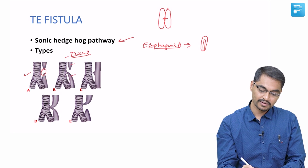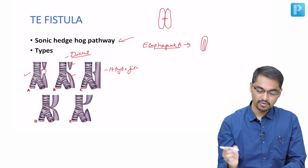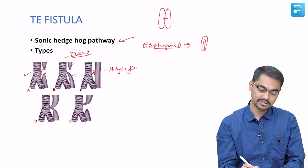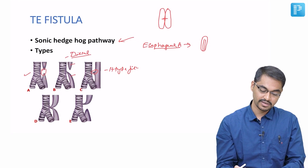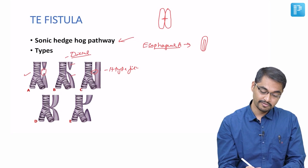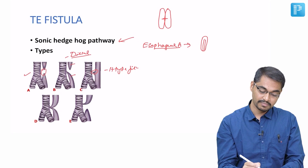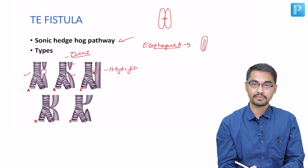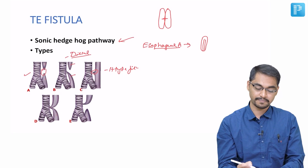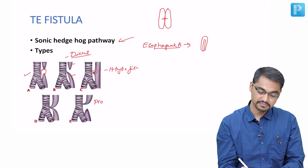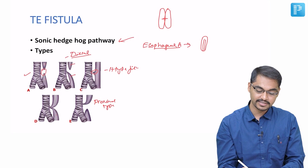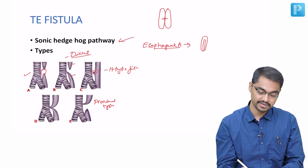The third type is otherwise known as H-type fistula, where only a rim of the esophagus communicates to the trachea in the middle of the esophagus. The fourth type has a central atretic segment, but both the proximal and distal segments communicate to the trachea. The fifth and final type is the proximal type, where the proximal atretic segment communicates with the trachea whereas the distal atretic segment is a blind pouch.